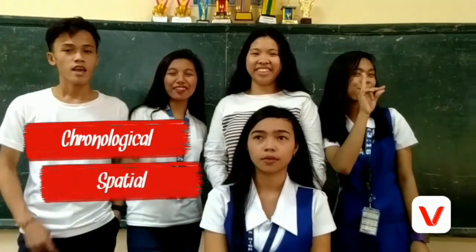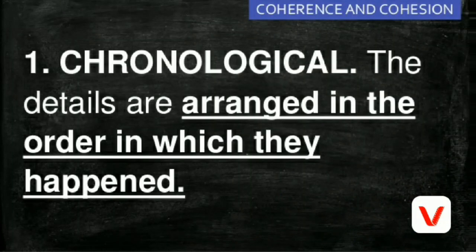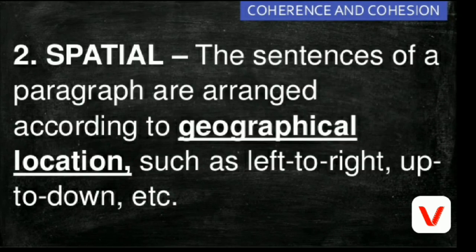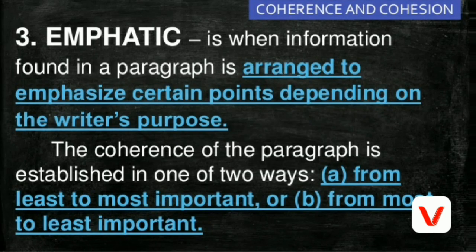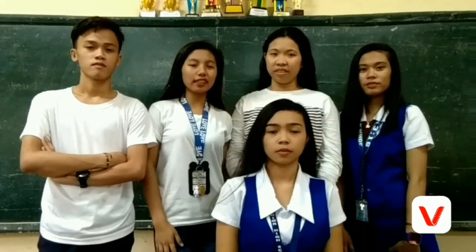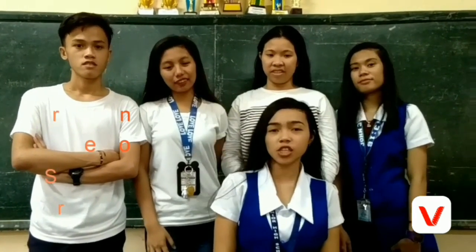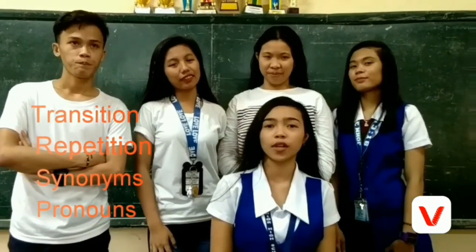Under coherence and cohesion, there are chronological, spatial, and elliptic order. And also signal dividers. There are transitions, repetitions, and patterns, synonyms and pronouns.